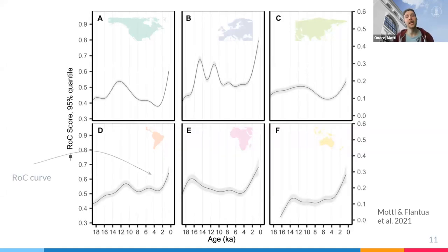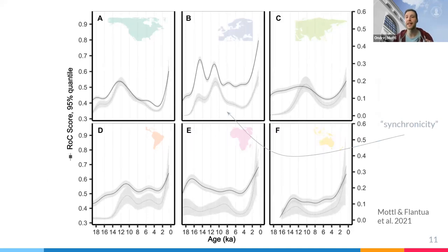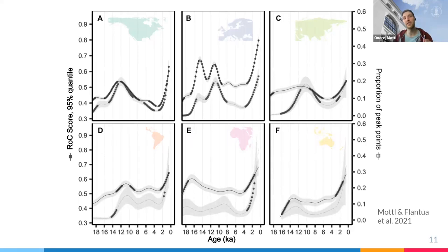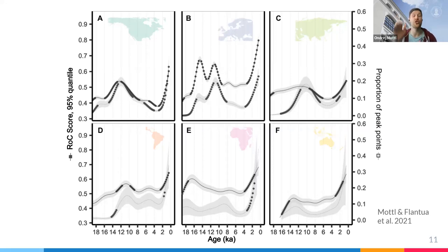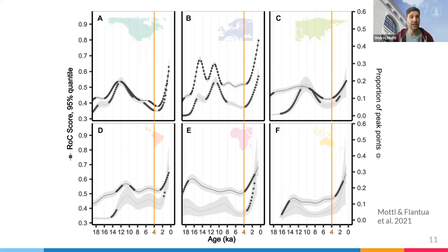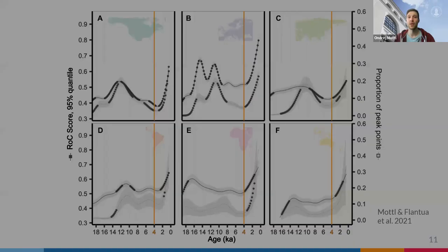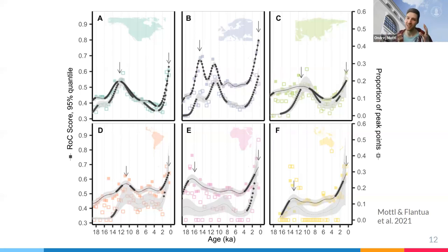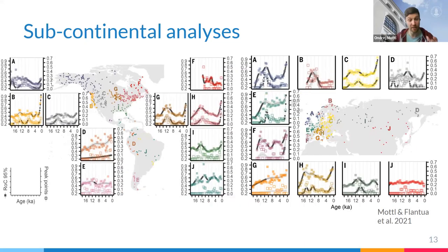We took the first derivative of both the rate-of-change curve and the synchronicity curve and tested whether it was significantly different from zero, marking these moments with black dots. This tells us when the trend significantly changes trajectory — either increasing or decreasing. For both factors, we see the interesting result that already roughly three or four thousand years ago things start increasing, which is surprisingly early. That's the main result of the figure — I highly recommend reading the full paper for more detail.